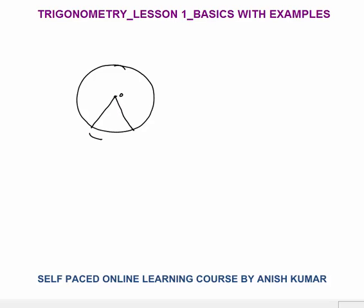This arc length is capital R, and the radius is also R for this circle. The central angle in this case would be one radian. It means that if the arc length is R as well as the radius is R, the central angle is called one radian.